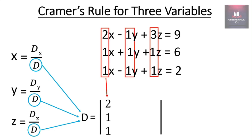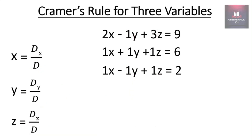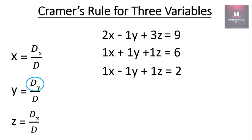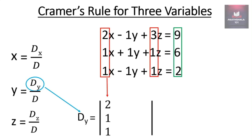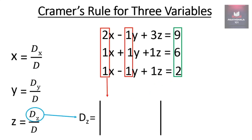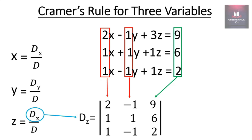D is equal to the determinant of x coefficients, y coefficients, and z coefficients. Dx is equal to the determinant of constants, y coefficients, and z coefficients. Dy is equal to the determinant of x coefficients, constants, and z coefficients. Dz is equal to the determinant of x coefficients, y coefficients, and constants.